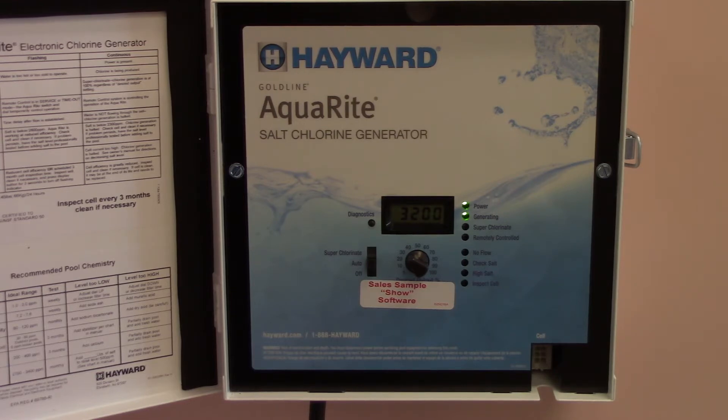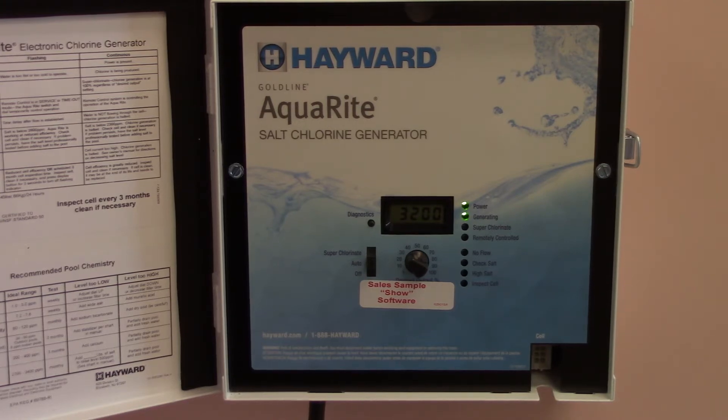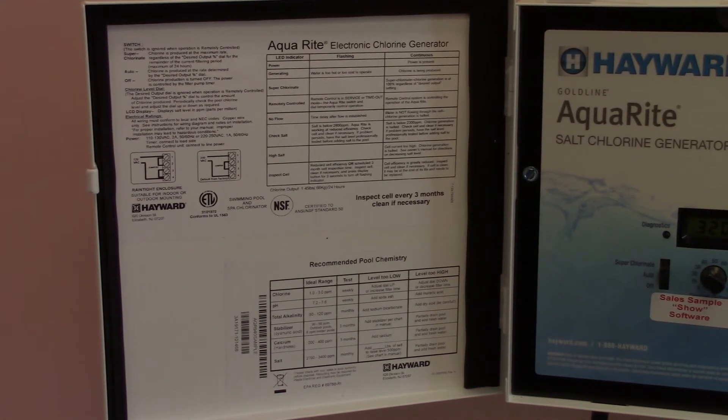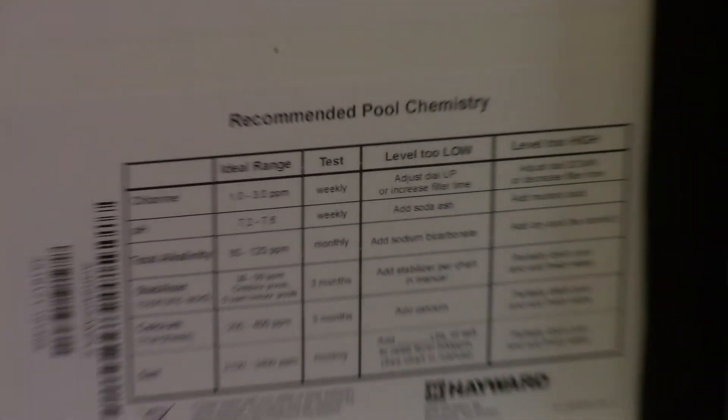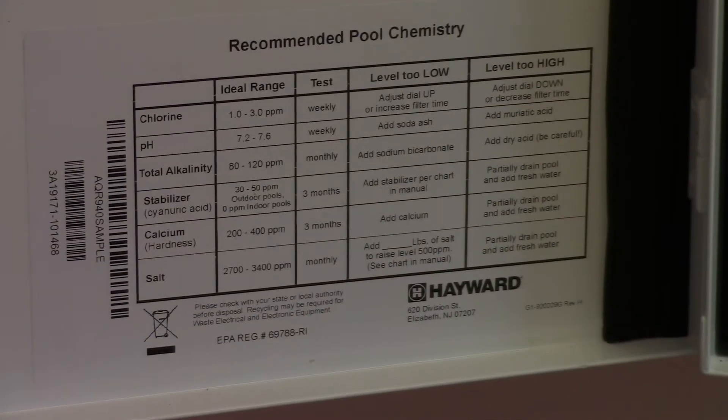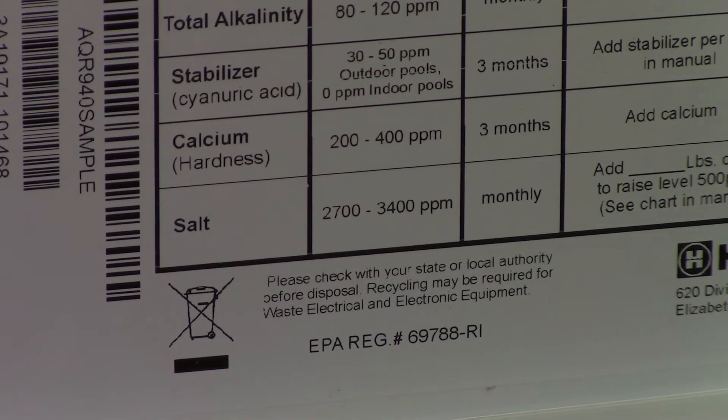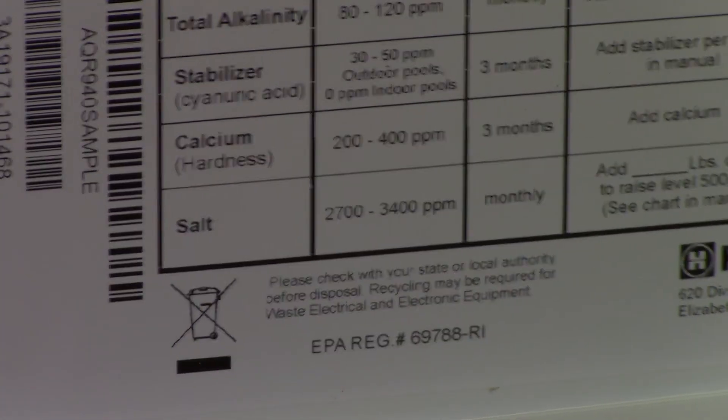As we all know when you have your swimming pool you have to keep the water balanced. If you look inside the door of your actual unit, I'm going to zoom in here a little bit, down here these are the recommended guidelines for your water chemistry. It includes the guidelines for how much salt you need to have in there which in this case is supposed to be 2700 to 3400 parts per million and you should be checking that value on a monthly basis if not more often.